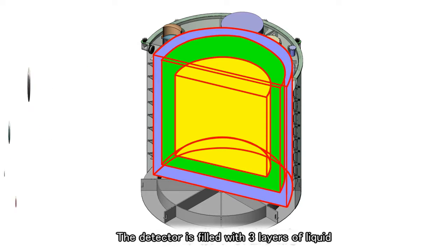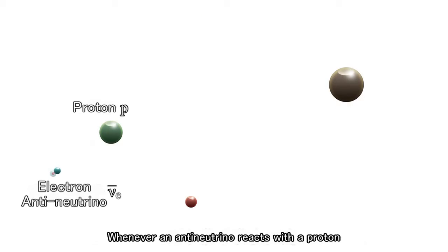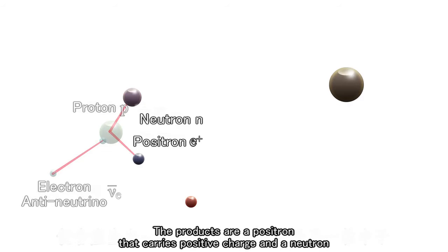The detector is filled with three layers of liquid. Whenever an antineutrino reacts with a proton, the products are a positron that carries positive charge and a neutron.